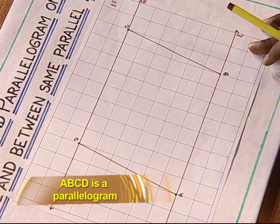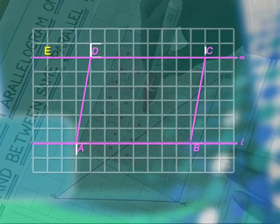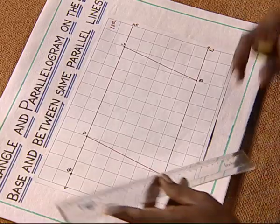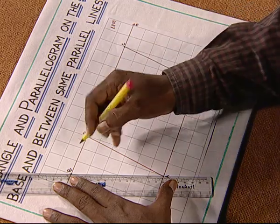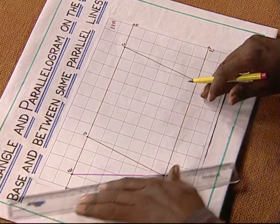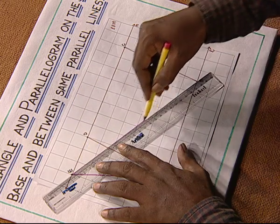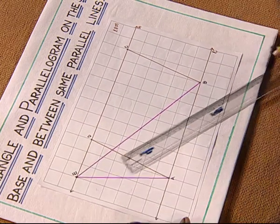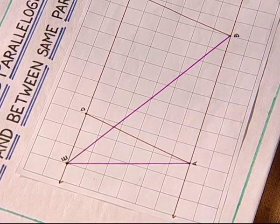Now we take another point on line m and call it point E. We join AE and BE with a different color. Now children, we have triangle AEB formed between the two parallel lines.